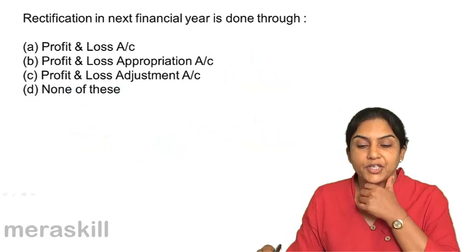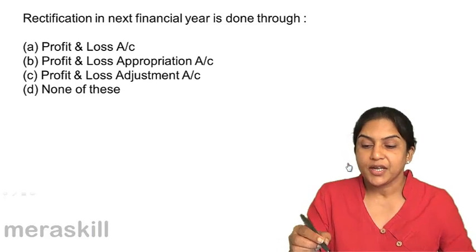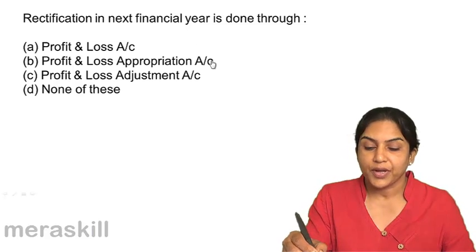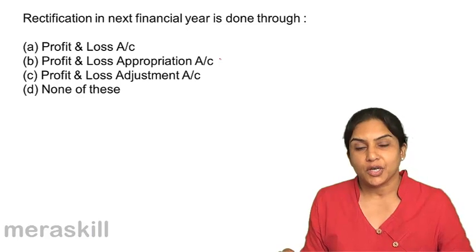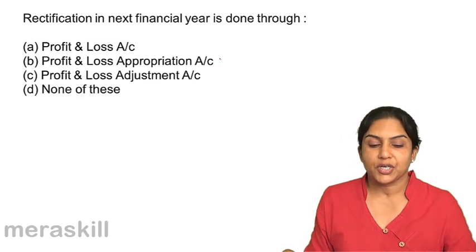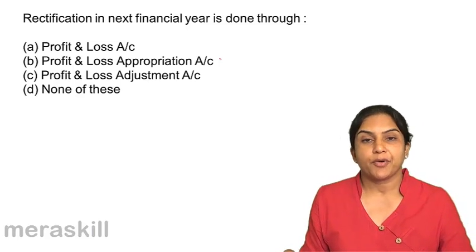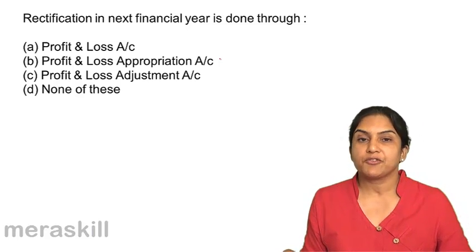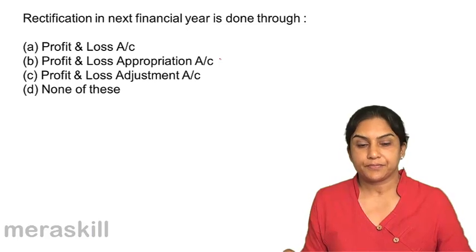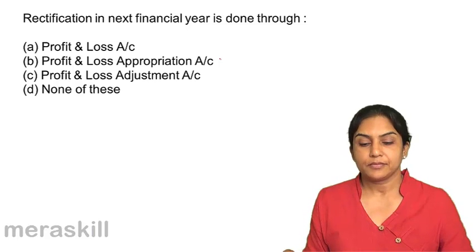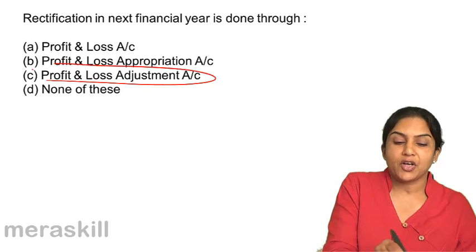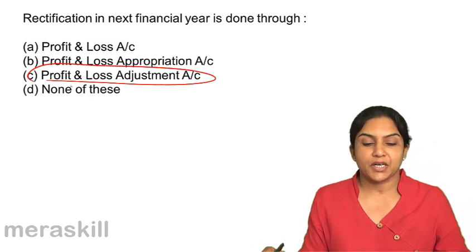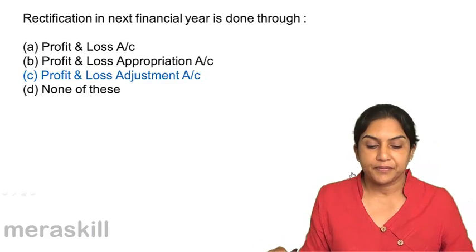Rectification in the next financial year is done through: A, profit and loss account; B, profit and loss appropriation account; C, profit and loss adjustment account; or D, none of these. Rectification in the next financial year is done through the profit and loss adjustment account. Correct answer C.